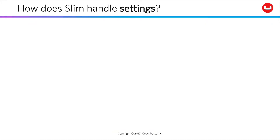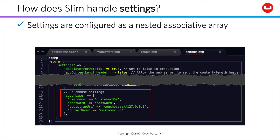You can also globalize settings using SLIM. You can assign associative arrays within the settings object created within the settings file. In our case, for the purposes of this course, we'll assign username, password, bootstrap URI, and bucket name values, although such things would likely in a production app be assigned dynamically.